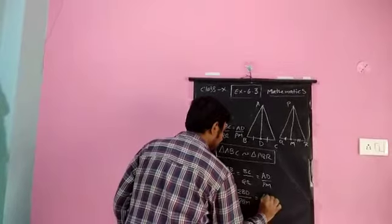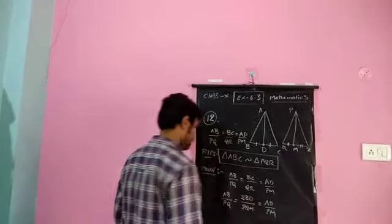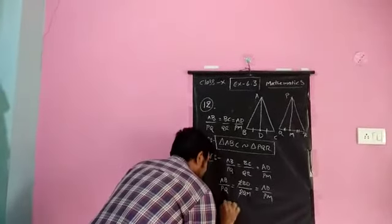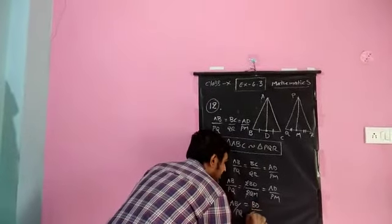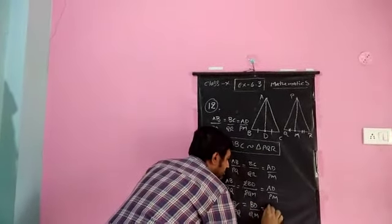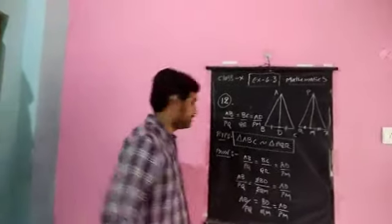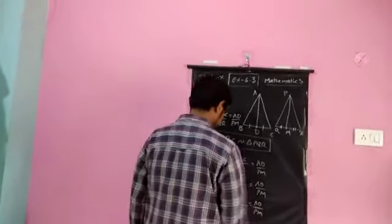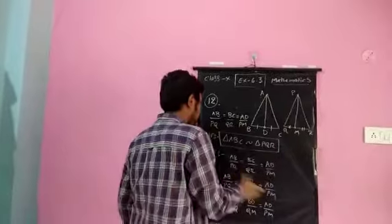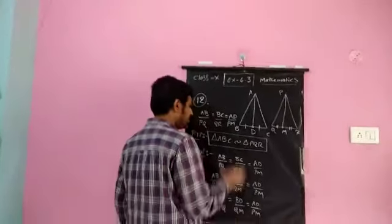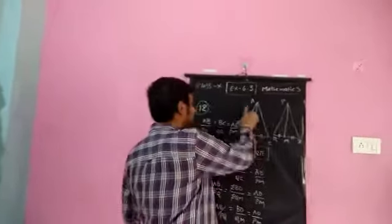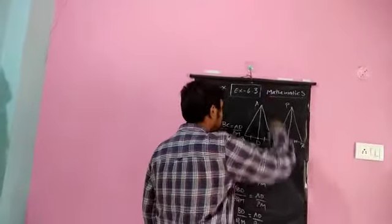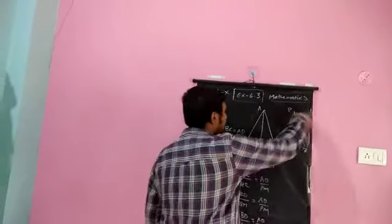The 2s cancel, giving: AB/PQ = BD/QM = AD/PM. This is what I derived, but I still need to prove triangle ABC similar to triangle PQR. I have two sides in proportion but no direct route to the third side for SSS on the original triangles.